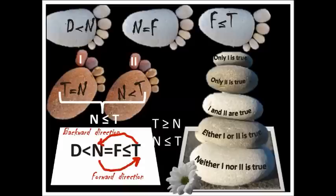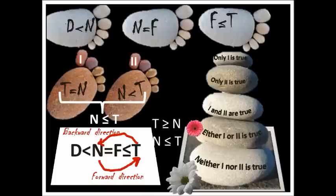So you should select 'either one or two is true.' The trick: when the same two symbols are used in both conclusions, there are many chances for the answer to be 'either one or two.' For such a case, combine both conclusions together and check in the equation — you will get the right answer. Don't forget to select 'either one or two.'